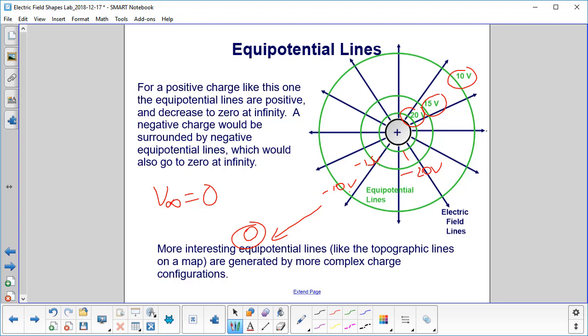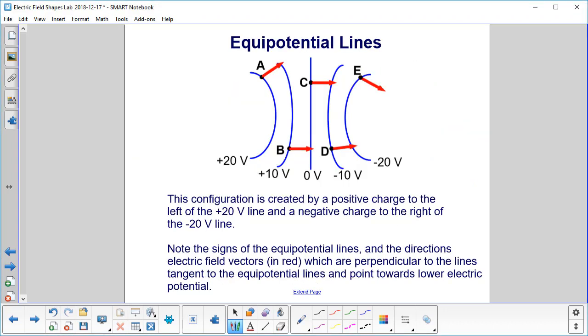You can generate more interesting equipotential lines, like the topographic lines on a map, by more complex charge configurations. This configuration is probably created by a positive charge over here and a negative charge over here.